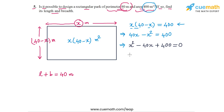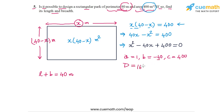Let's check the discriminant of this equation. The coefficients are: a = 1 (coefficient of x square), b = minus 40 (coefficient of x), and c = 400 (the constant term). The discriminant is b square minus 4ac, so that's (minus 40) square minus 4 times 1 times 400, which is 1600 minus 1600.